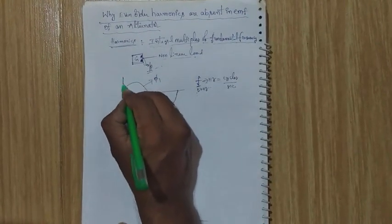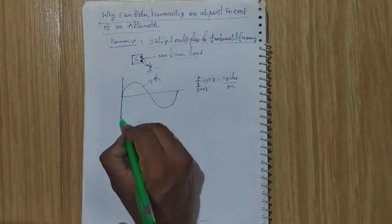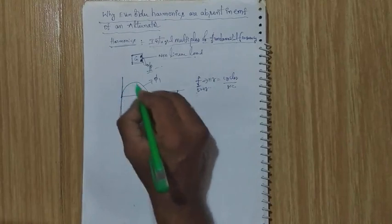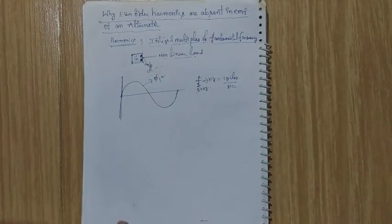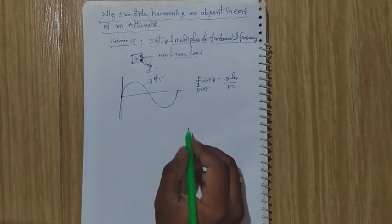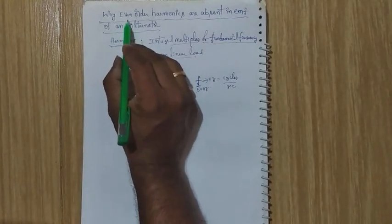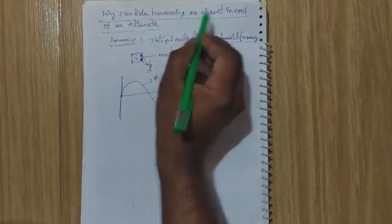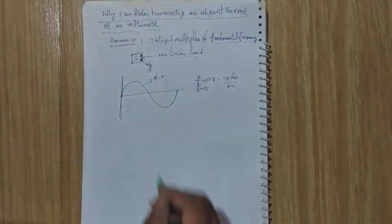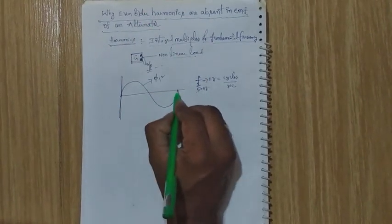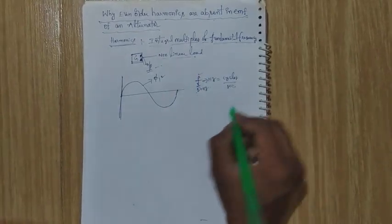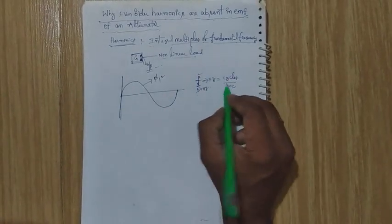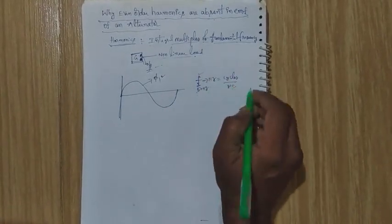Let us consider the fundamental flux wave. This is the fundamental flux wave, represented by Pi₁. Listen carefully — this is a very important concept. Our topic is why even-order harmonics are absent in the EMF of an alternator. The frequency of this fundamental flux wave is 50 Hz, meaning 50 cycles per second.